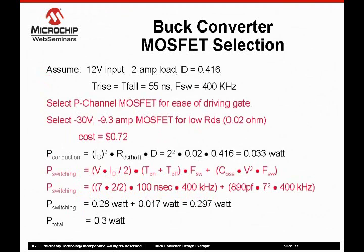To simplify the gate drive circuitry for the MOSFET, a P-channel device was selected. An N-channel device would require a gate drive circuit that incorporates a method to drive the gate voltage above the source. The cost of a level translator and charge pump will outweigh the savings of using an N-channel device versus a P-channel device. A 20-volt MOSFET was not selected because the available devices in the catalog had maximum gate-to-source voltage ratings of only 12 volts. With a 12-volt input voltage, the applied gate voltage might exceed the device specifications.